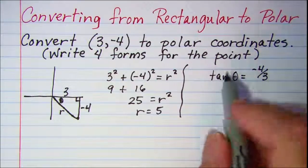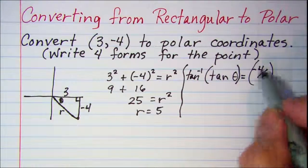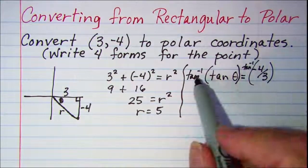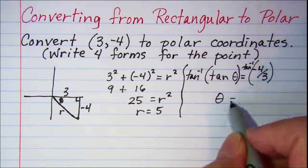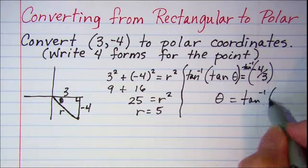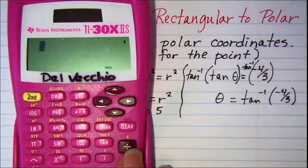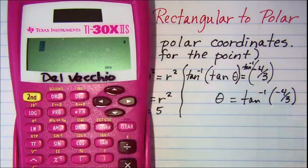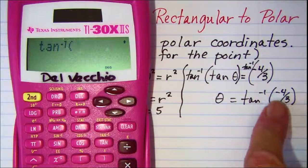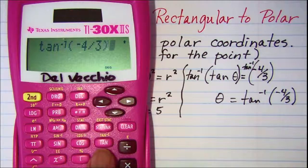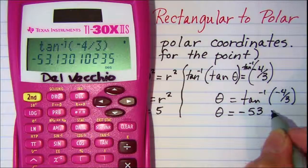To get θ by itself, we need to take the inverse tangent of both sides. So when we take the inverse tangent or arctangent of the tangent, we just get θ. On the right side, we have tan⁻¹(-4/3). Let's use our calculator to find that value. Make sure you're in degrees. We'll press second, then tangent to get the arctangent function, then negative 4 divided by 3. We get θ = -53.13°.